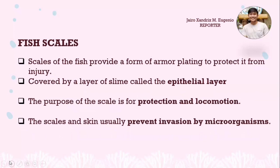The fish environment can be dangerous and full of predators, pests, and sharp objects that can cause injury. Scales of fish provide a form of armor plating to protect it from injury. The scales are also covered by a layer of slime called the epidermal layer, adding extra protection to the scales and the body beneath. The purpose of the scale is for protection and locomotion, and the scale and skin usually prevent invasion by microorganisms.